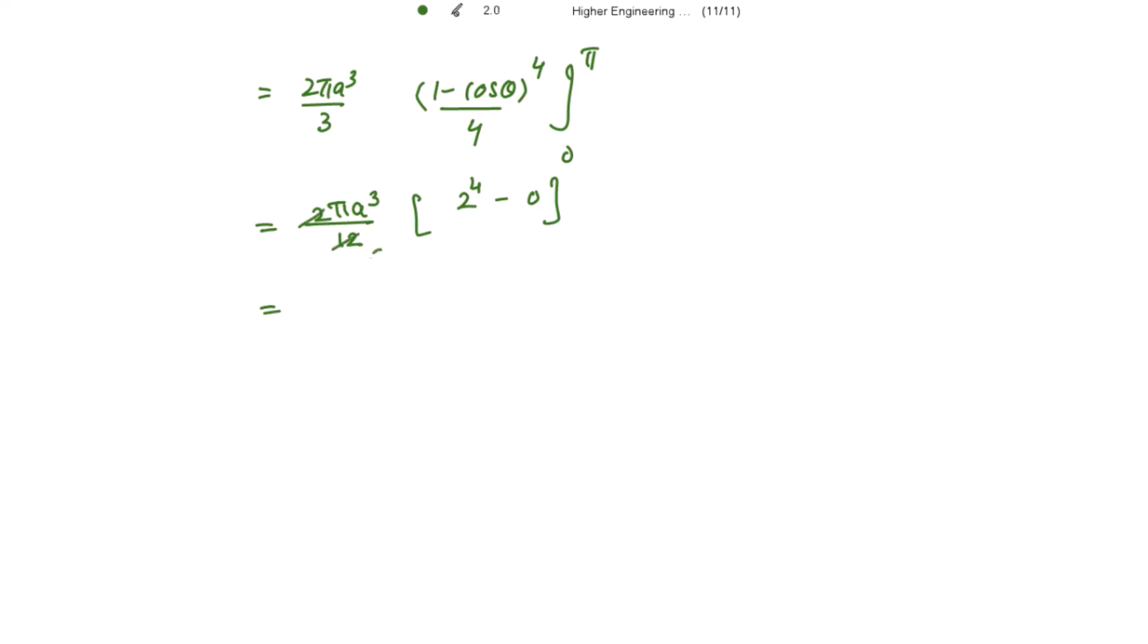So this is 2, this is 6, this is pi a cube over 6 into 16 and this will be equal to 8 pi a cube over 3.